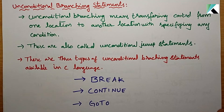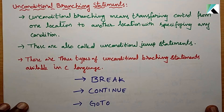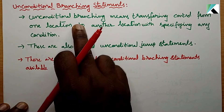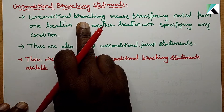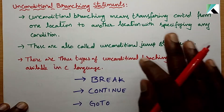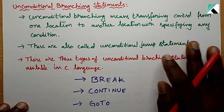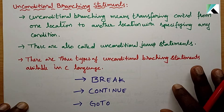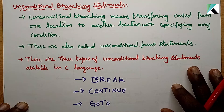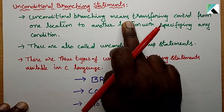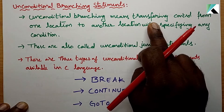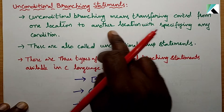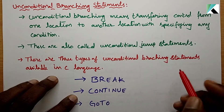Hi everyone, in this video we will make an Unconditional Branching Statement in C programming. Unconditional Branching means transferring control from one location to another location.